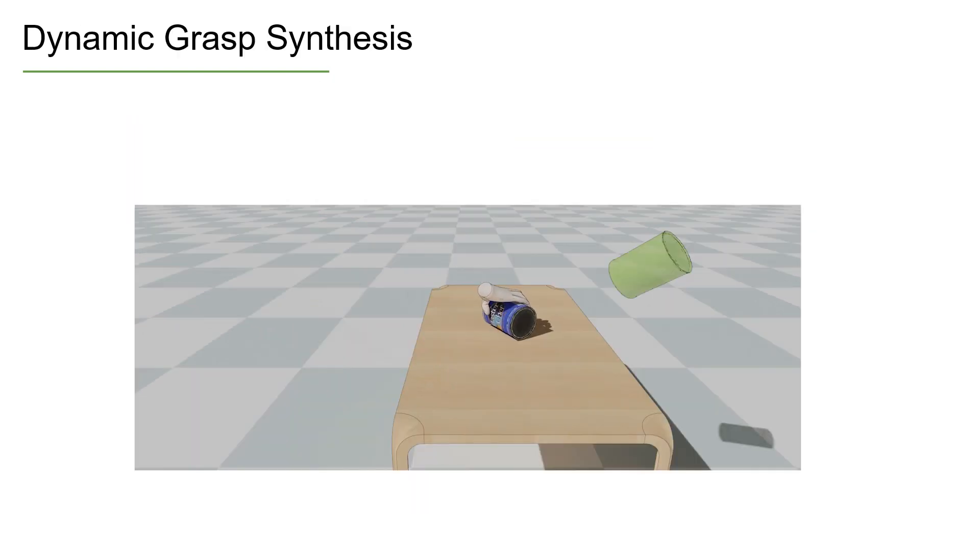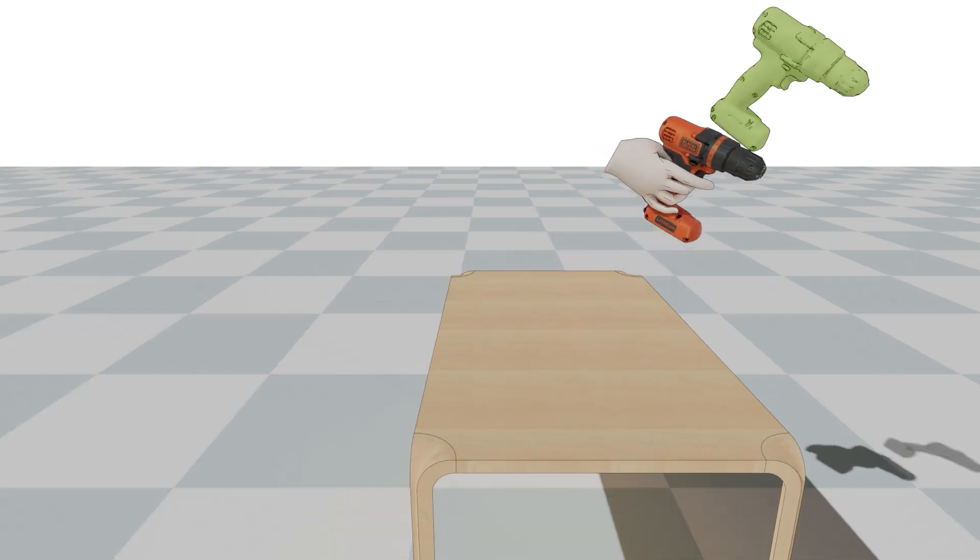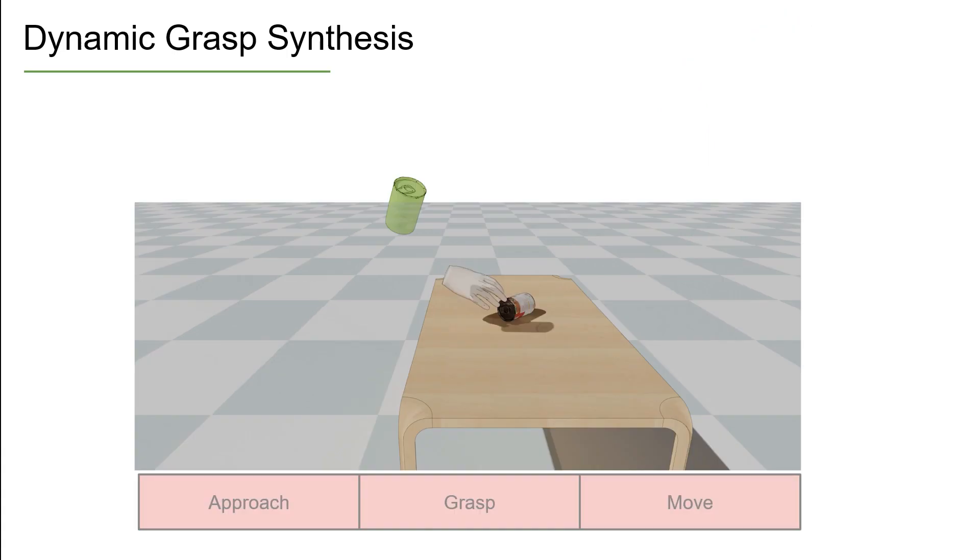In this paper, we introduce the task of dynamic grasp synthesis and the first step towards solving it. Given a known 6D pose and a static grasp reference as input, our goal is to generate a grasping motion. This grasping motion consists of three stages.